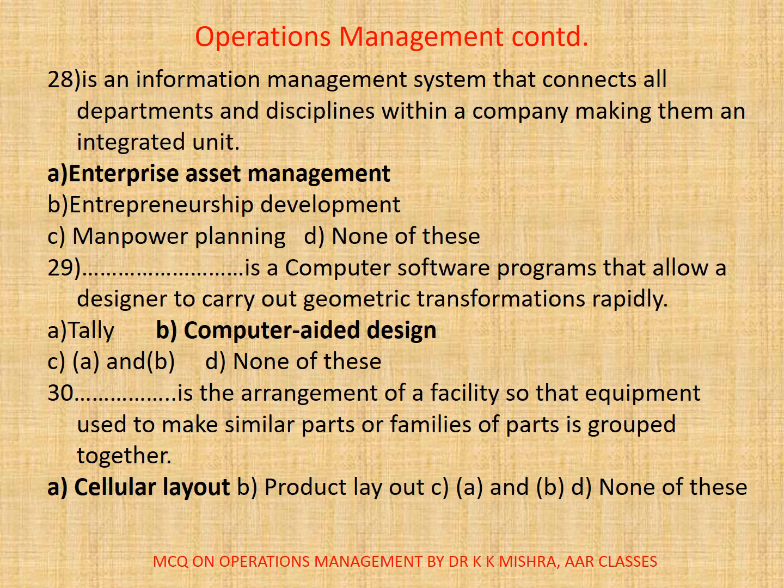28. Dash is an information management system that connects all departments and disciplines within a company making them an integrated unit. A. Enterprise asset management. B. Entrepreneurship development. C. Manpower planning. D. None of these. The correct option is A. Enterprise asset management.